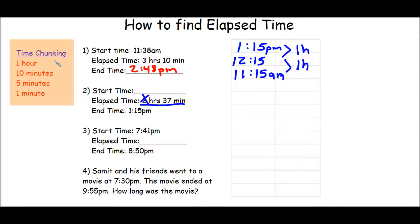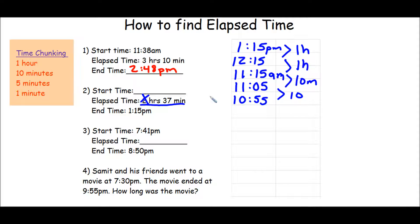Now we need to take away 37 minutes. Let's do it 10 minutes at a time. If I take 10 minutes away, I'm going to end up with 11:05 — make your connection, that's 10 minutes. Take away another 10 minutes, I'm going to end up with 10:55 — that's 10 minutes. Take away 10 more, I'm going to end up with 10:45 — connect, 10 minutes.